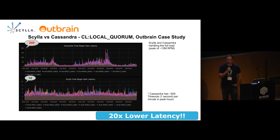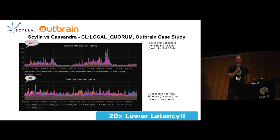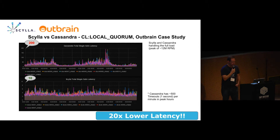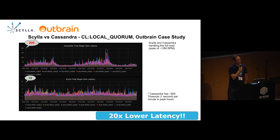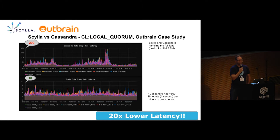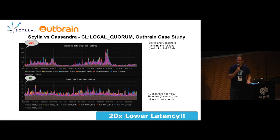Here's a use case from a user — Outbrain, an ad tech company — comparing Cassandra versus Scylla. The results are simple: a 2,000% reduction in latency. The scale on the upper graph is at 200 milliseconds; the lower one is 10 milliseconds. That means from your application you can either onboard 20x more users, or if you want to reduce your infrastructure and keep the same SLA, reduce it by the same amount and save money. Cassandra is an amazing architecture; the only problem is it's not as efficient as it should be, and this is a real user using it today.